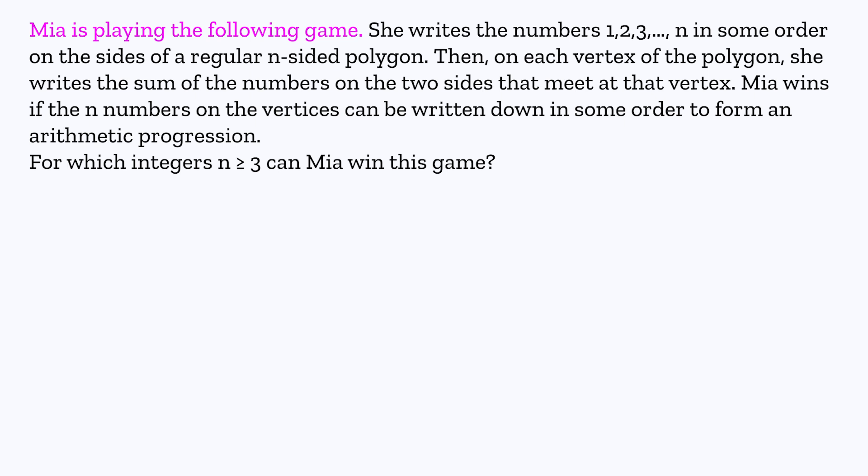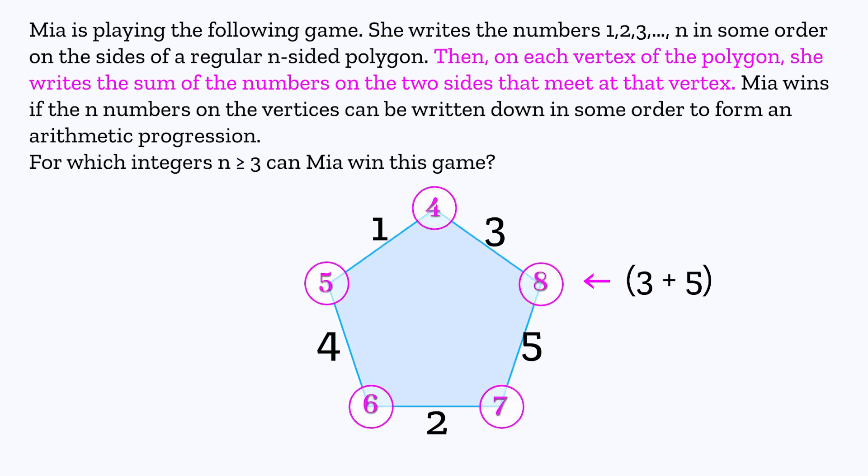Mia is playing the following game. She writes the numbers 1, 2, 3 to n in some order on the sides of a regular n-sided polygon. Then on each vertex of the polygon, she writes the sum of the numbers on the two sides that meet at that vertex.